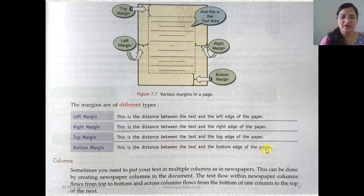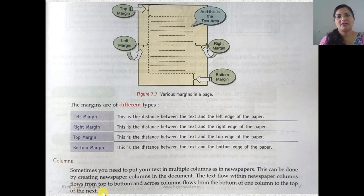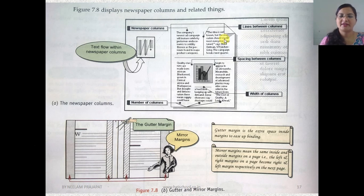Sometimes you need to put text in multiple columns, as in a newspaper. This can be done by creating newspaper columns in the document. The text flows within the newspaper columns from top to bottom, and across columns it flows from the bottom of one column to the top of the next.